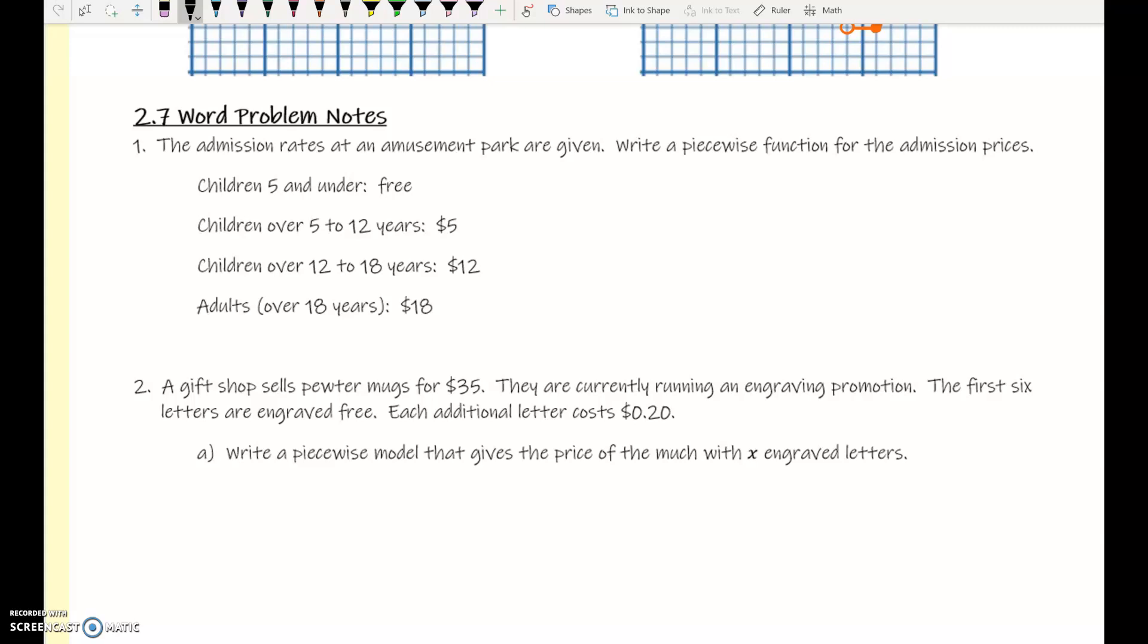So children 5 and under are free. How would you mathematically say free? Zero. So I'm going to put zero, and then I'm going to write four, and then we have to write some sort of statement involving x, where x is the age of the people. So children 5 and under, that'd be x is less than or equal to 5. Children who are 5 or who are younger than 5.